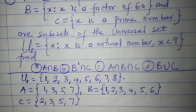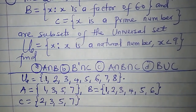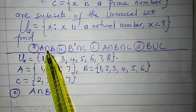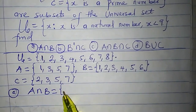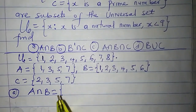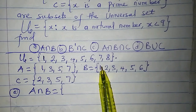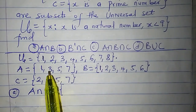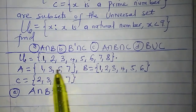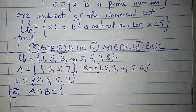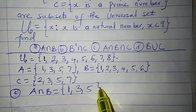We can now go ahead and determine each of these. The first one says A intersection B. For A intersection B, we have the set of all elements that are found in both A and B — that is what intersection means. What elements are in A and are also in B? We have 1, 3, and 5. So A intersection B is {1, 3, 5}.